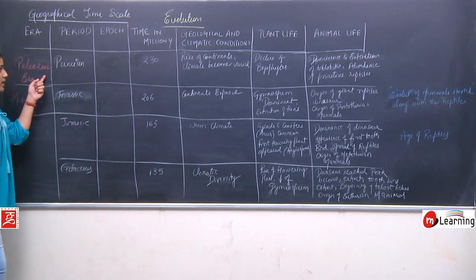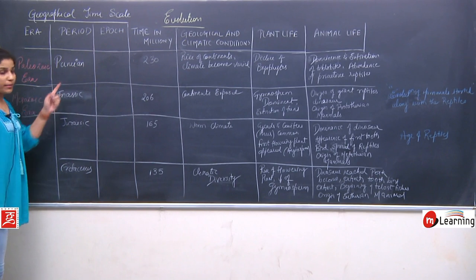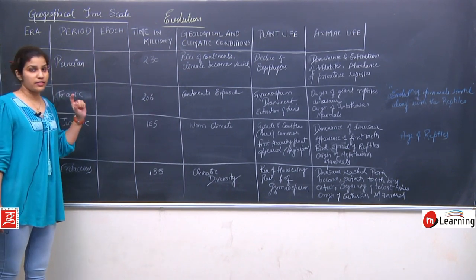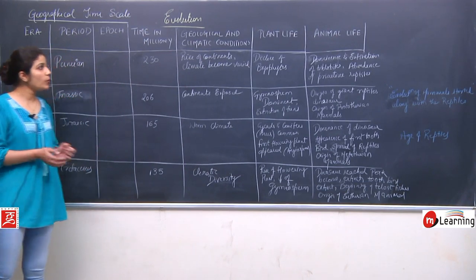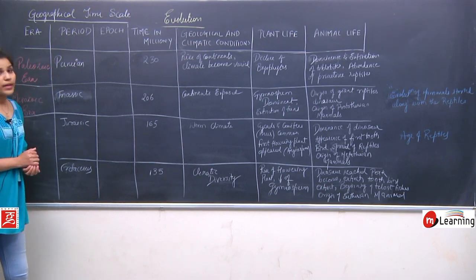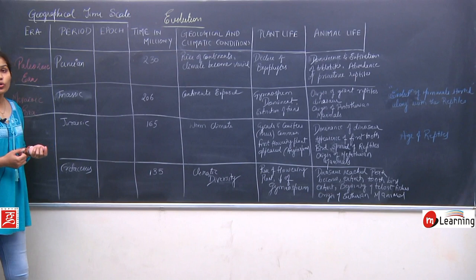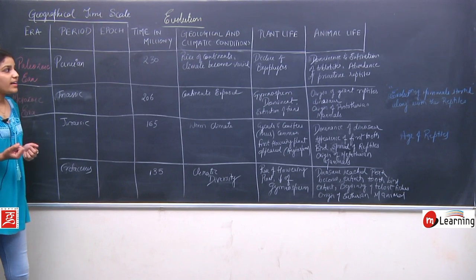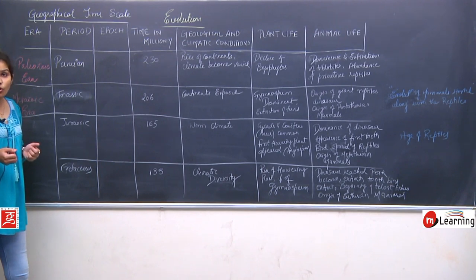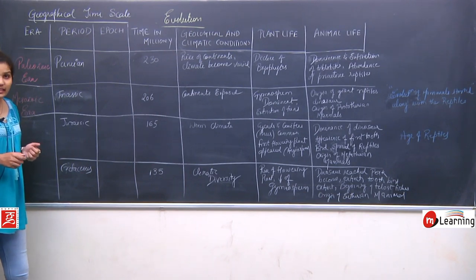We will start with the Paleozoic era, the last period: Permian. We have completed our 5 periods. The Permian period started around 230 million years ago. The climatic conditions were varied — more and more variations in climates were observed. In terms of plant life, there was a decline of the bryophytes, which had appeared in the Ordovician period and were now getting extincted.